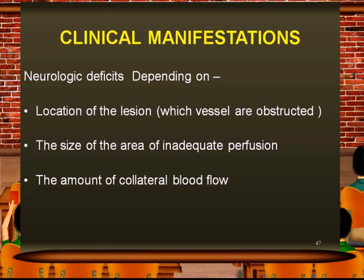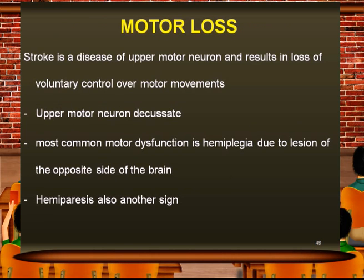In this part 3, we see the clinical manifestations of stroke patients and the neurological deficits which can result, depending on the location of the lesion, which vessel is obstructed, the size of the area of inadequate perfusion, or the amount of collateral blood circulation. Not all stroke patients will manifest in a similar fashion — they may present in different ways. It is a disease of upper motor neuron lesions.